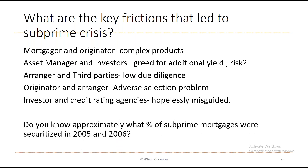Approximately 75% of subprime mortgages were securitized in 2005 and 2006. When this became a bubble, it was hard to control, and the Federal Reserve had to intervene and bail out many financial institutions.